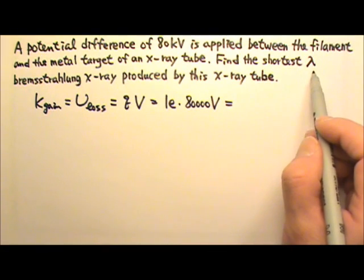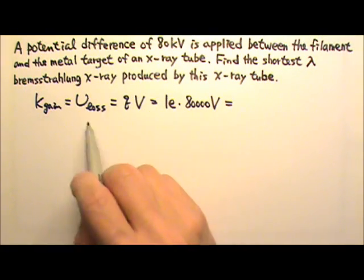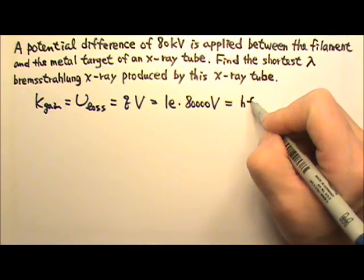To produce the shortest wavelength X-ray, the electron is going to lose all its kinetic energy and turn all that kinetic energy into the photon energy of an X-ray photon.